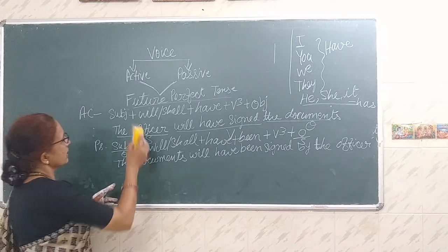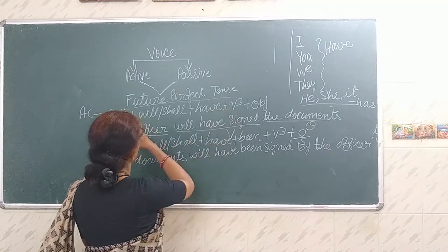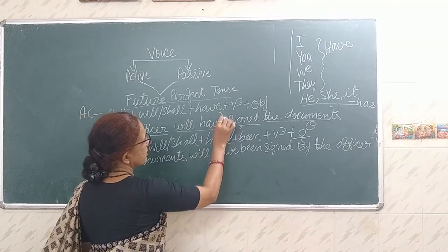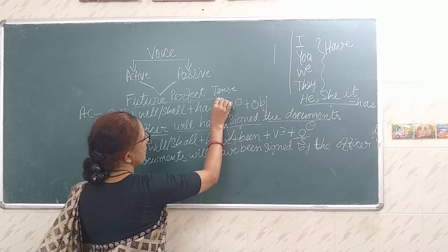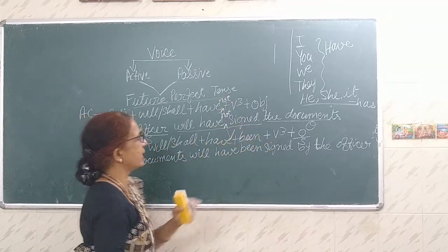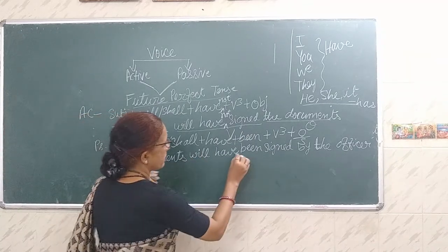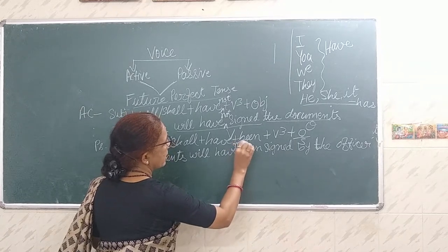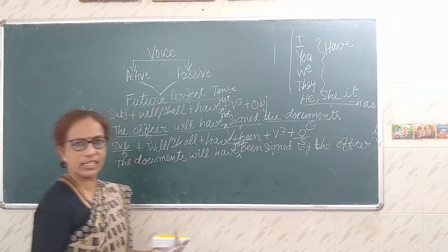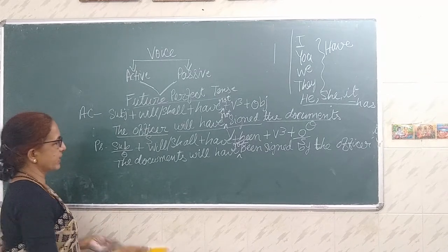If it is negative, the structure becomes: subject plus will or shall plus have not, then the officer will have not signed the documents. Passive: 'The documents will have not been signed by the officer.' Only one 'not' is added.